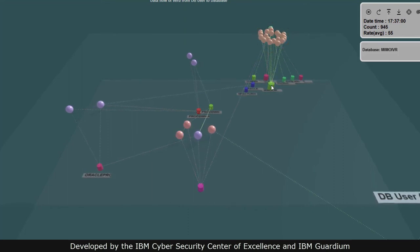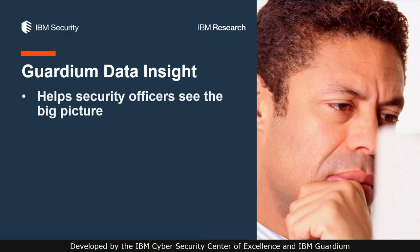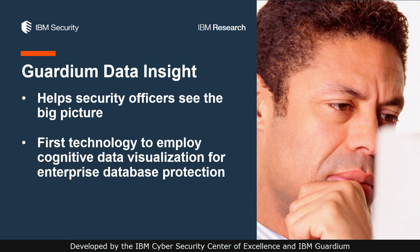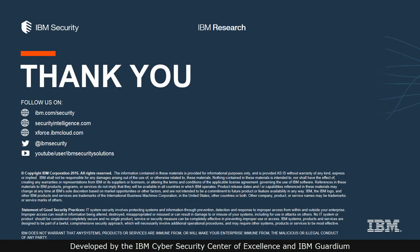In all these situations, spotting this kind of suspicious behavior would be very hard using traditional or previously available visualizations. In summary, Guardian Data Insight helps security officers see the big picture concerning data access in their organization. This is the first technology of its kind that employs cognitive data visualization for enterprise database protection. It provides an innovative and valuable tool to help monitor and detect attacks while they're happening. For more information, contact us at IBM Security. Thank you for joining us.